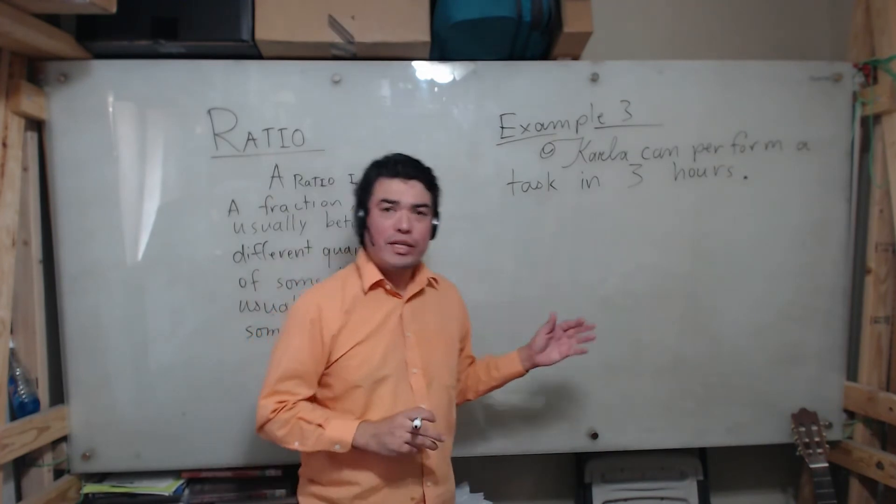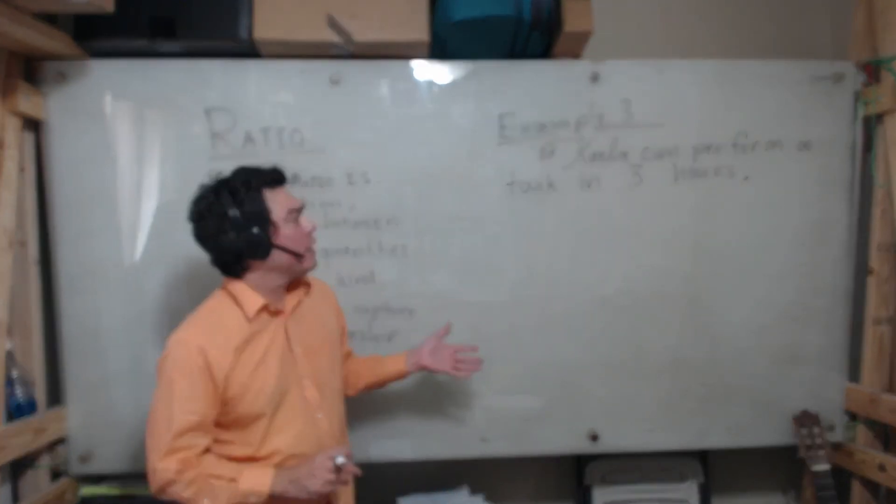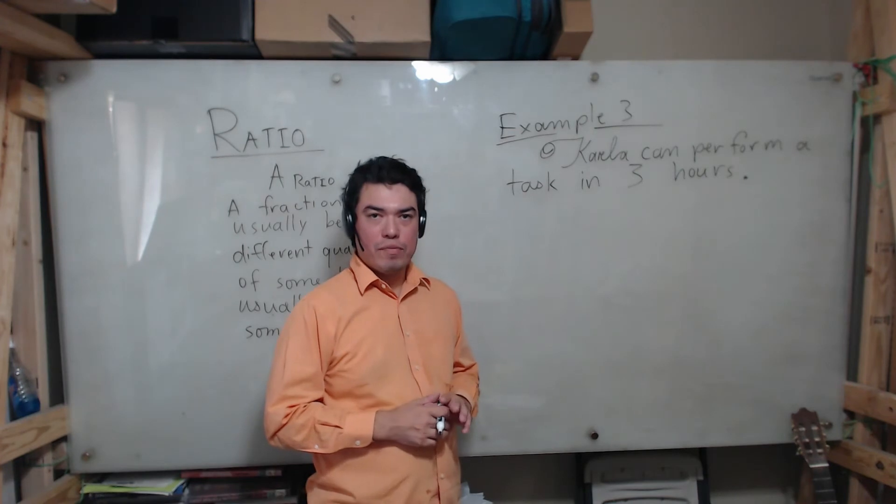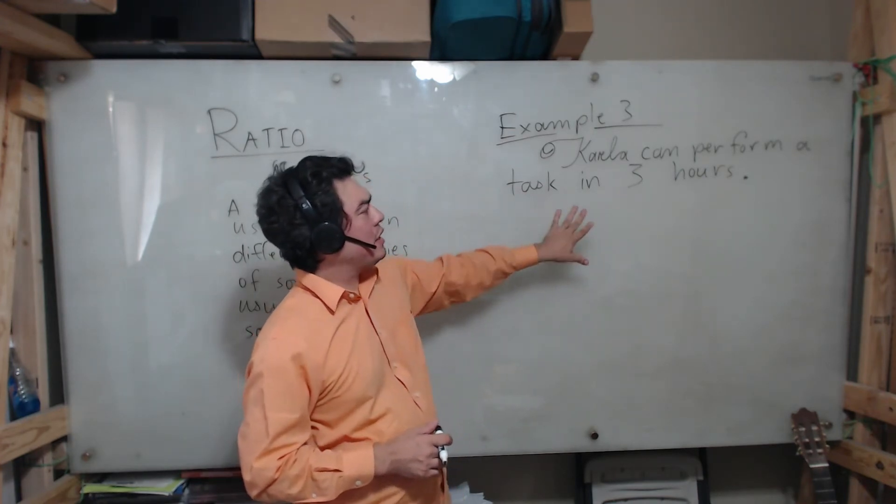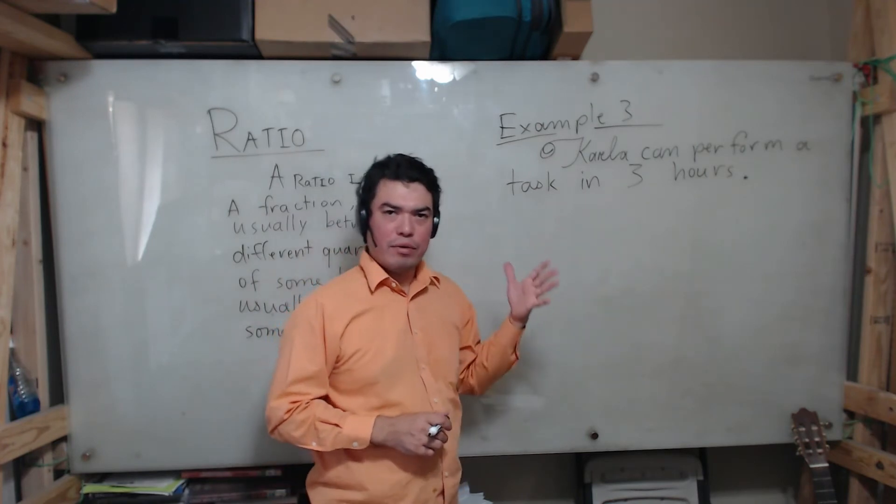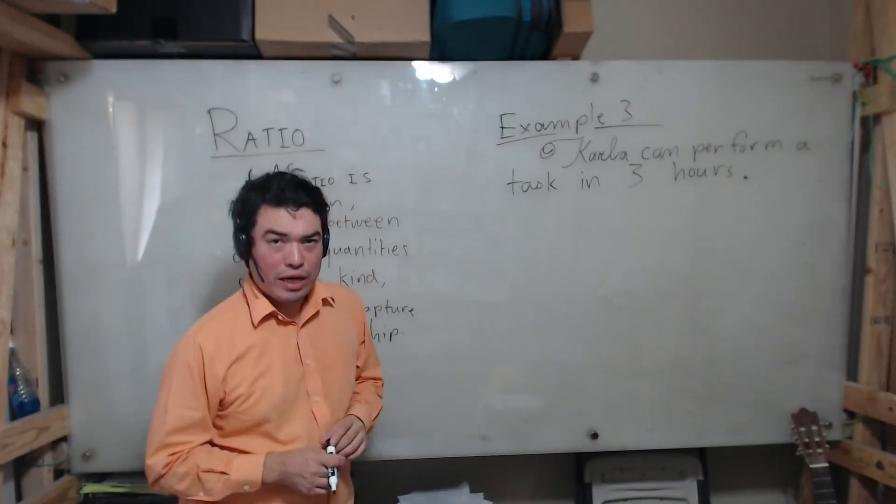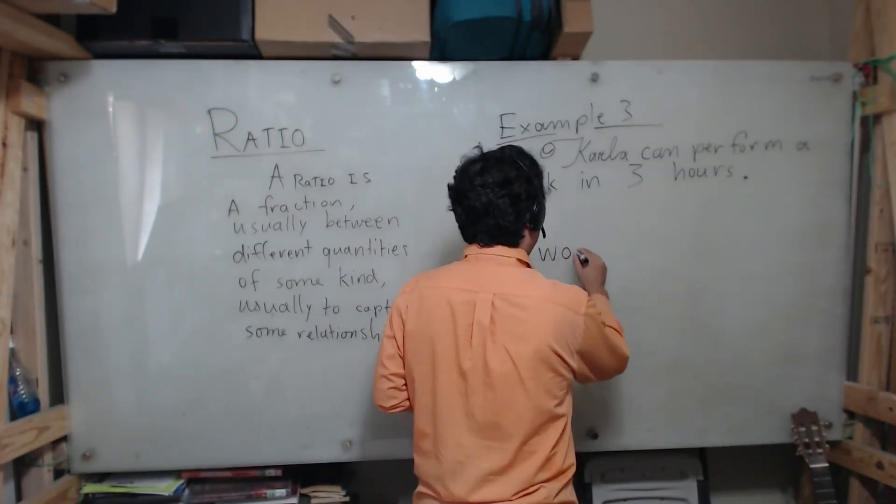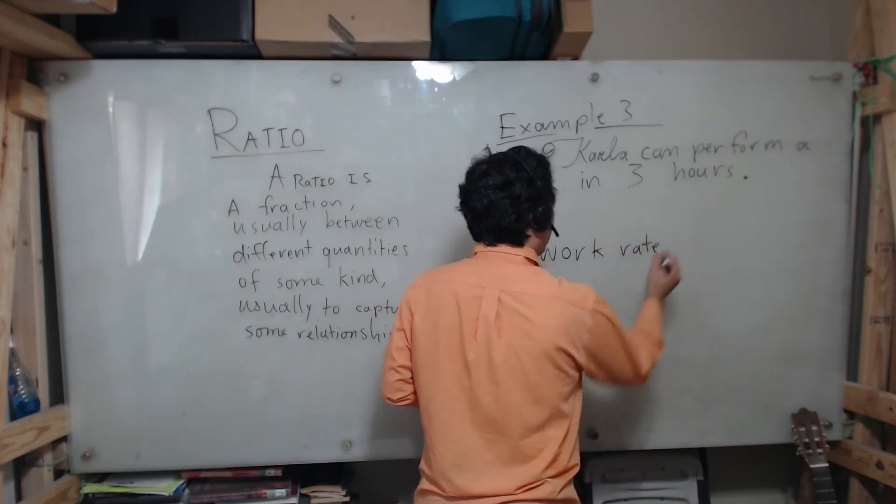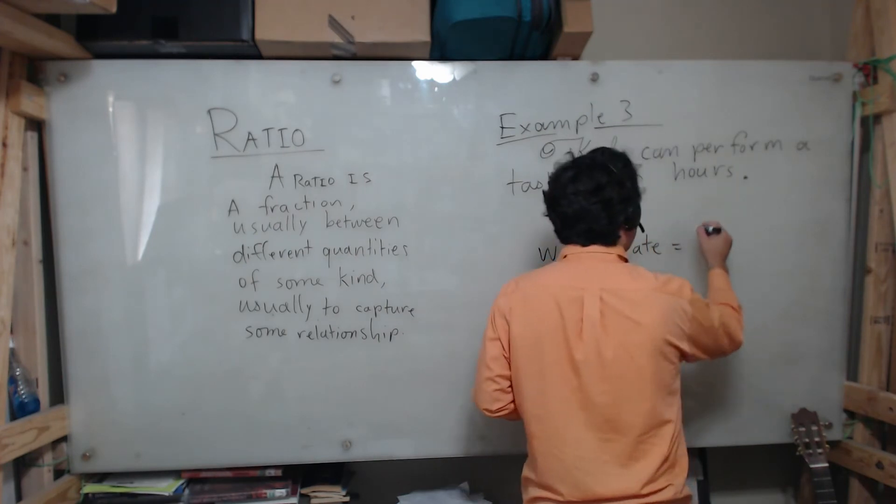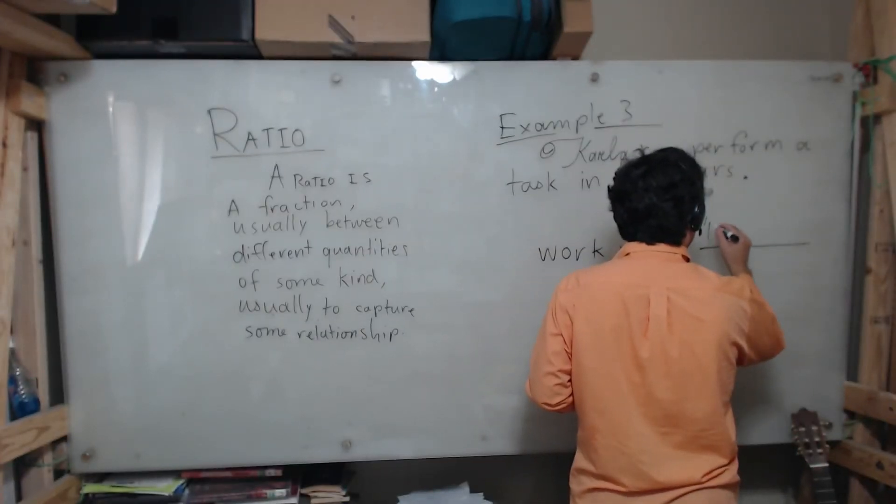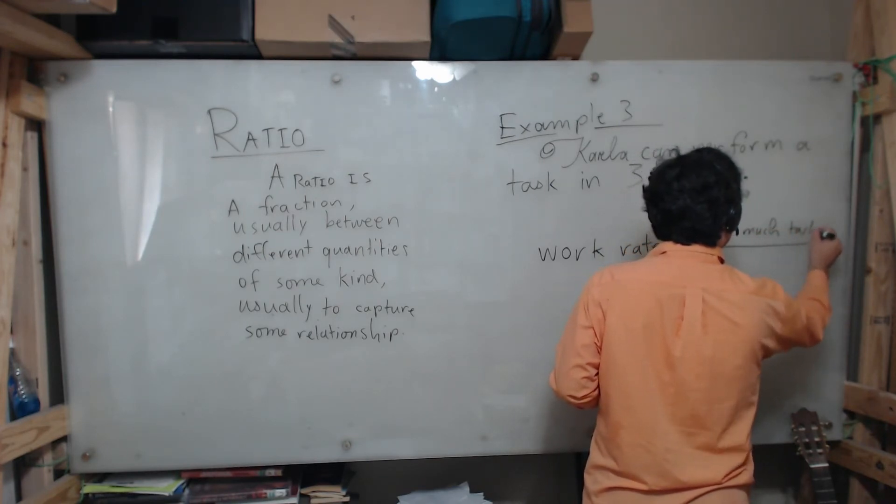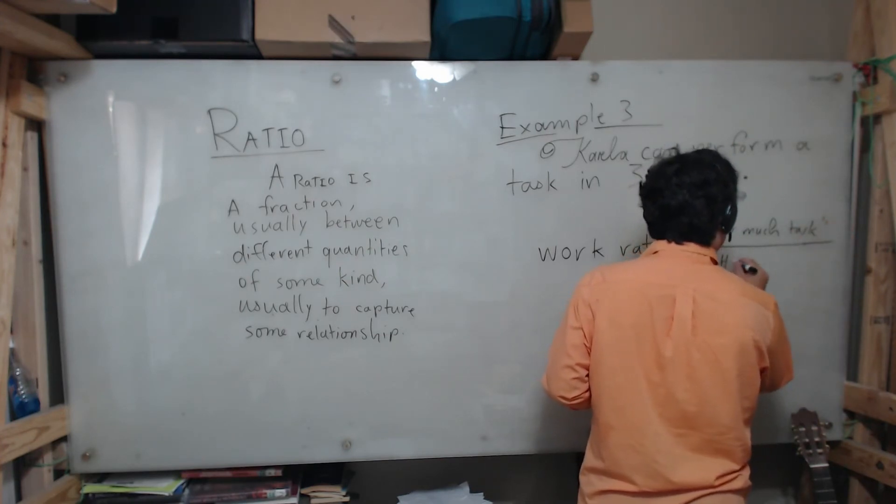Now I'm going to move on to example three. Example three is a type of ratio that you don't even see in everyday life but which comes out occasionally when you're dealing with arithmetic reasoning. In this example, Carla can perform a task in three hours. The ratio that we're going to be looking at here is something called a task rate or a work rate. We're going to define it as follows: the work rate, the rate at which someone is completing these tasks, is how much of a task they're doing and in how much time.